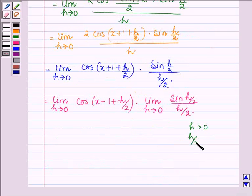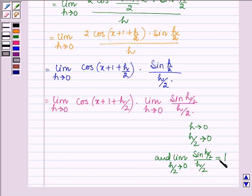As h approaches 0, h over 2 also approaches 0, and the limit of sin h over 2 over h over 2 equals 1. Therefore, the value of this limit is 1.